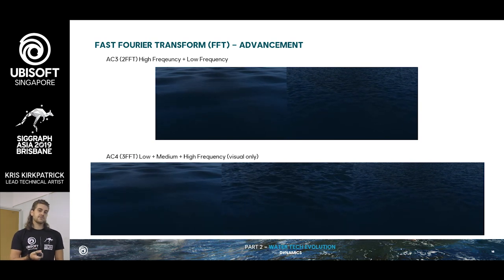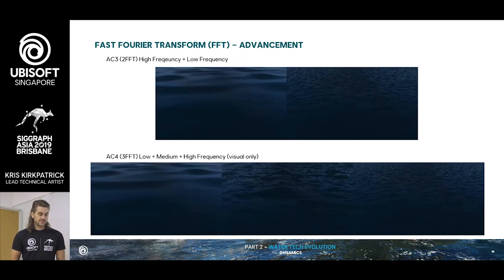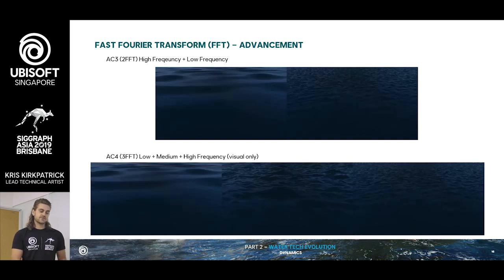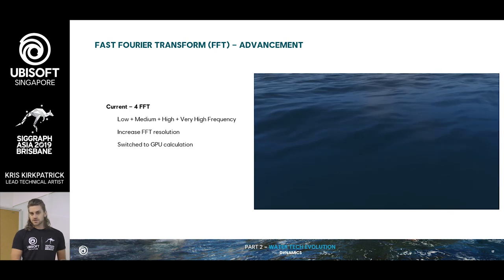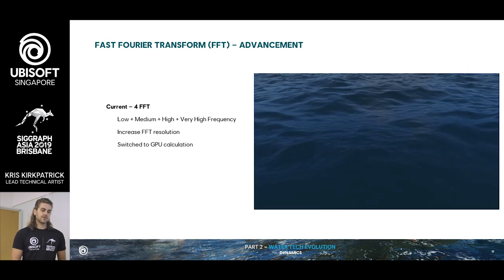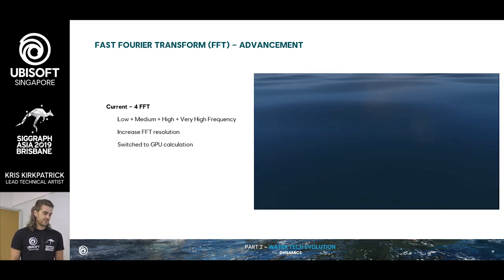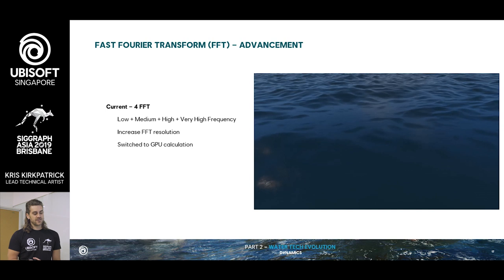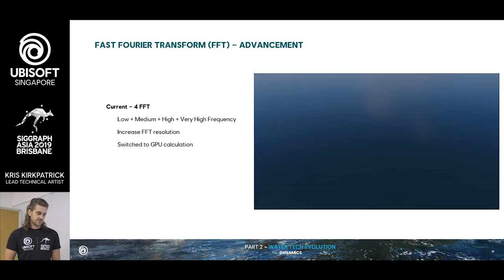To show how we've advanced that — back on AC3, we only had two FFT layers: a high frequency and a low frequency. On AC4, we added one more high-frequency FFT, but it was visual only, meaning those waves didn't affect the physics of the ship. And now we have four FFT layers, all of which can have physics impact. Technically we have a fifth where we scale the fourth to add even higher-frequency waves without physics impact. We also have a higher resolution and switched to GPU calculation.